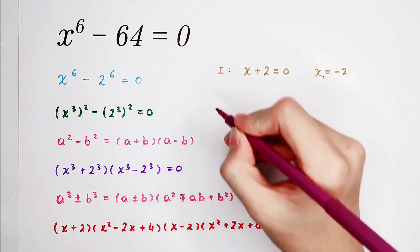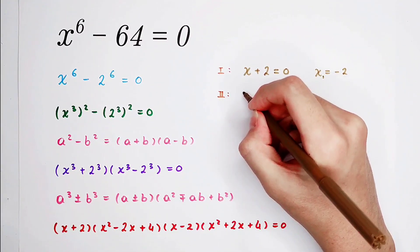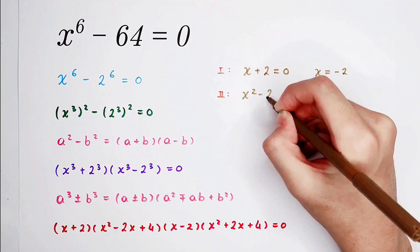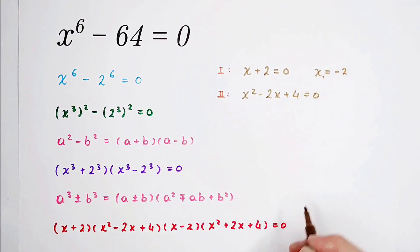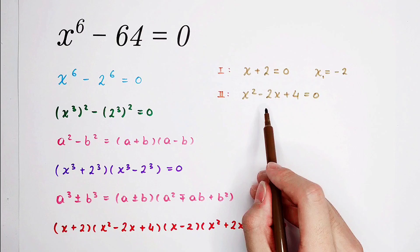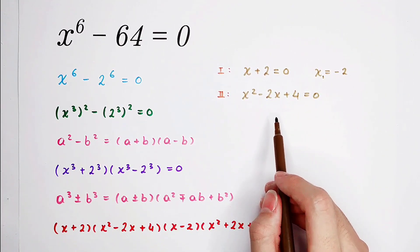In our second case, x squared minus 2x plus 4 equals 0. Of course, we know here we get delta is b squared minus 4ac. It is 4 minus 16, it is negative 8.